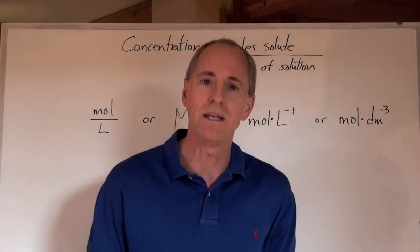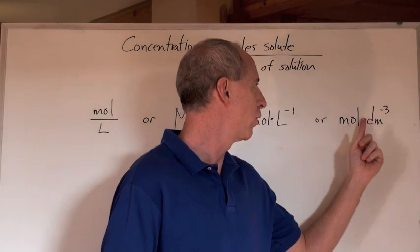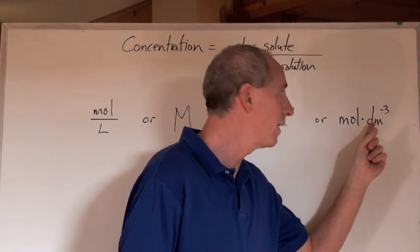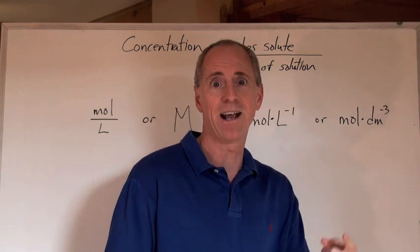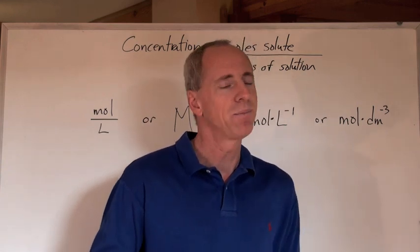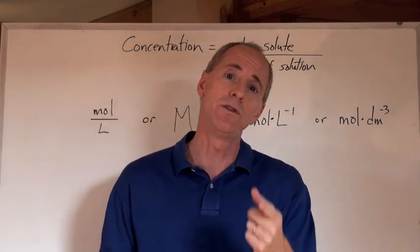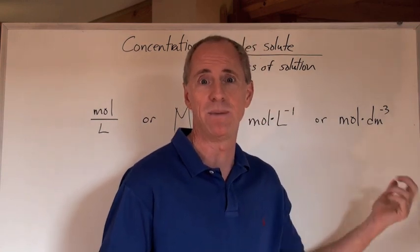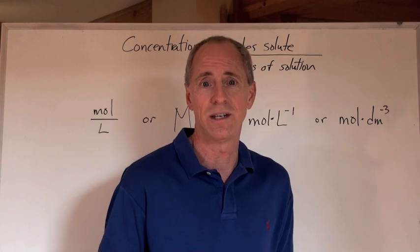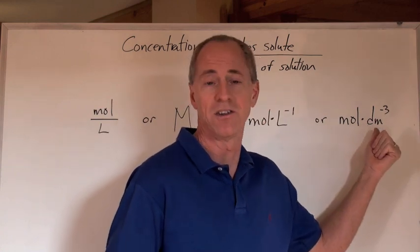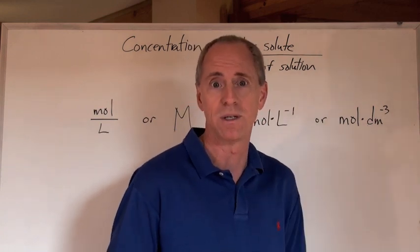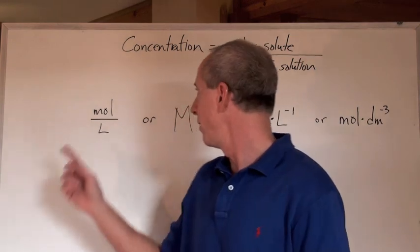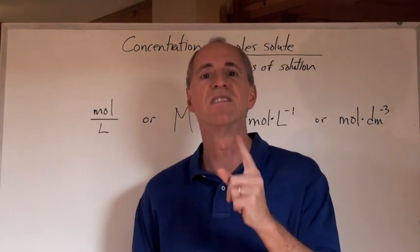When you're taking IB chemistry, it's moles per decimeter to the negative three, because a cubic decimeter is actually a liter. You'll have to tell me if you use that unit, because I don't know who uses it except for the IB exam. So once a year you have to write and understand that moles per cubic decimeter is actually a liter. I use moles per liter and big M, because it's easy.